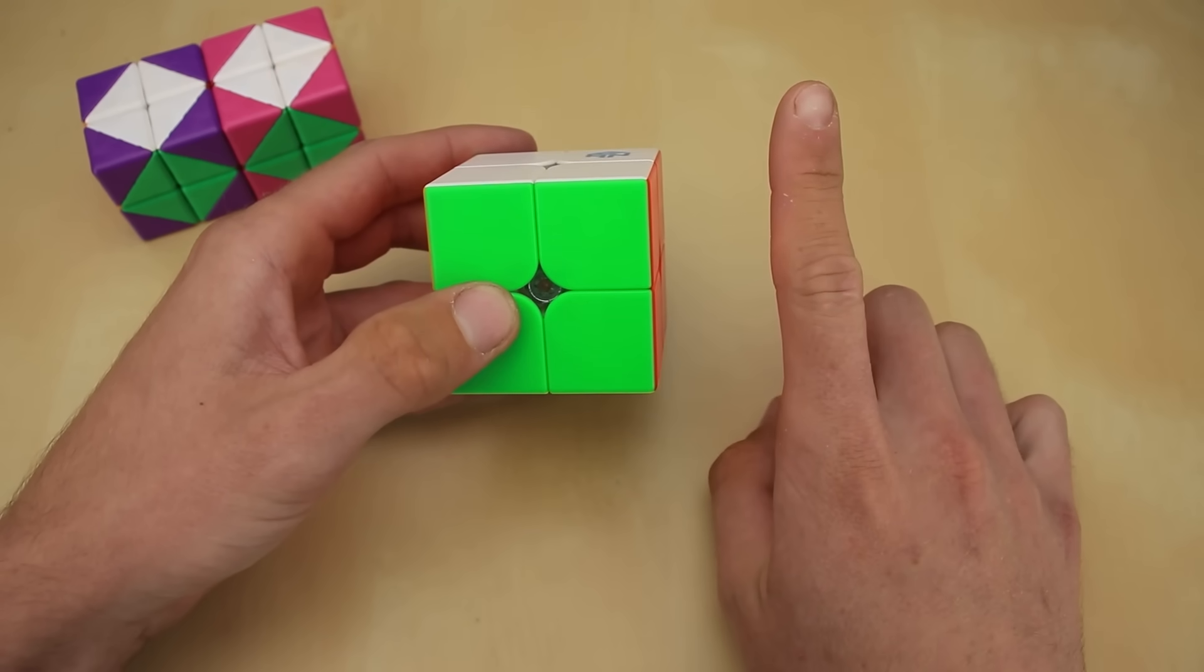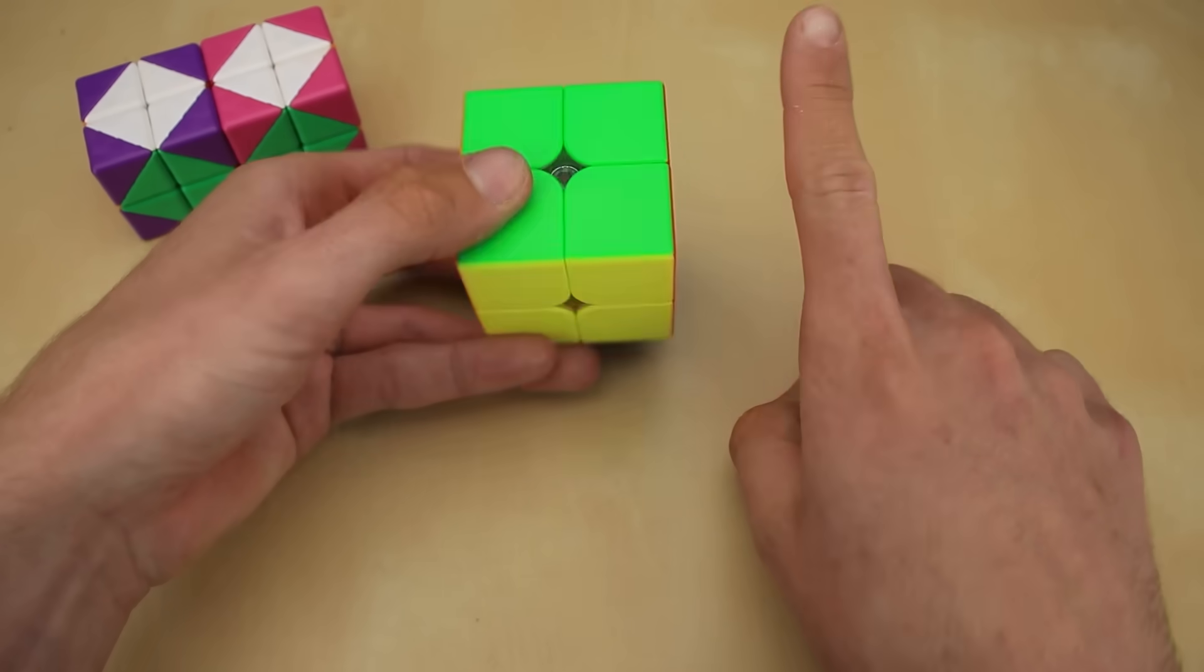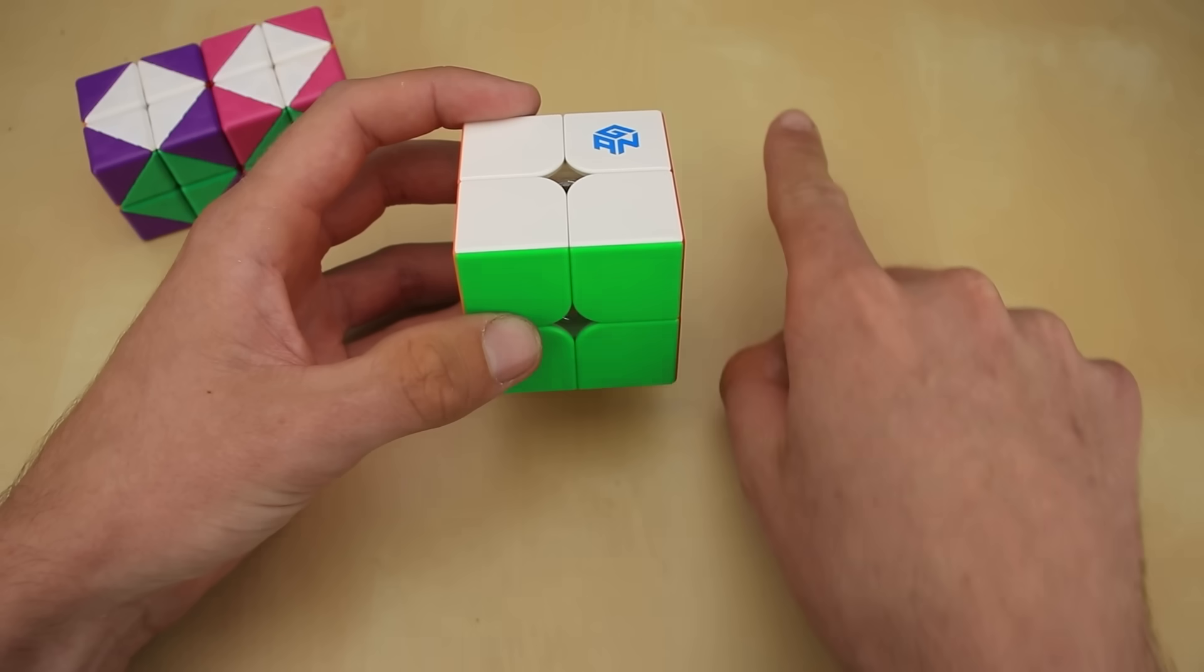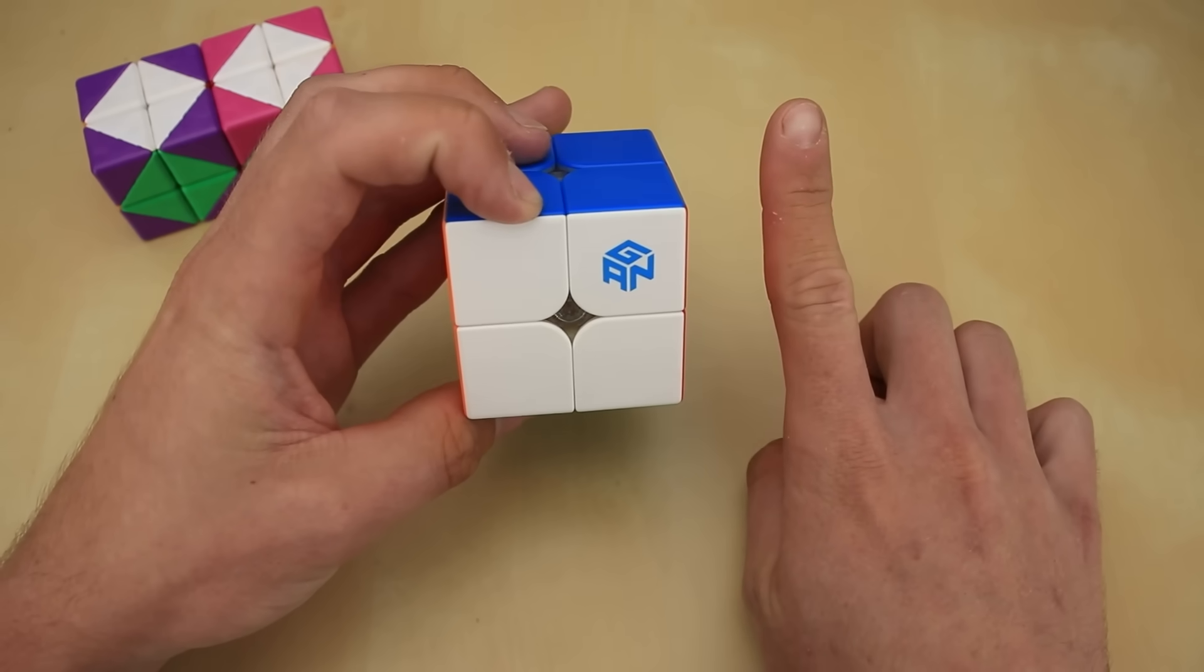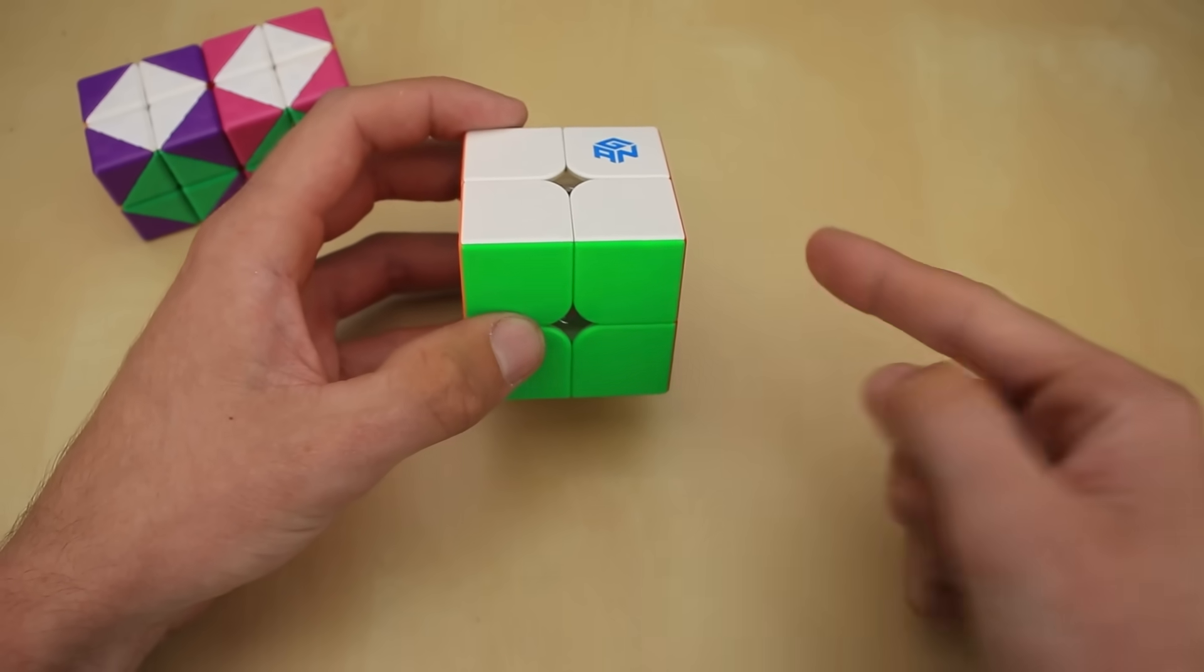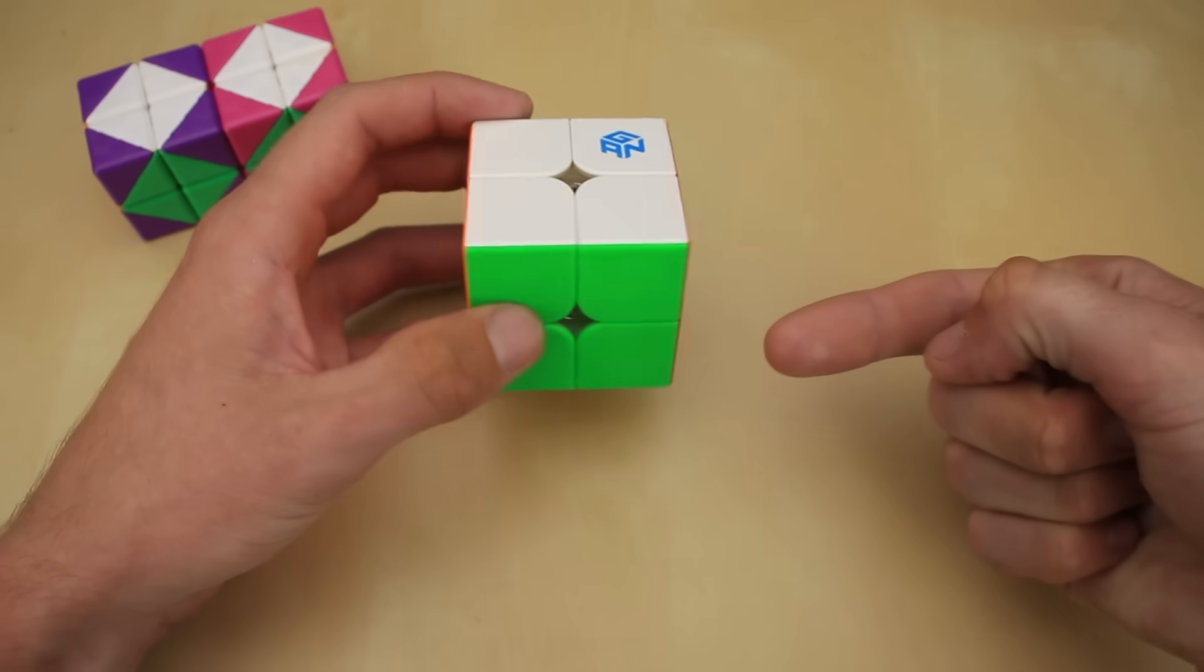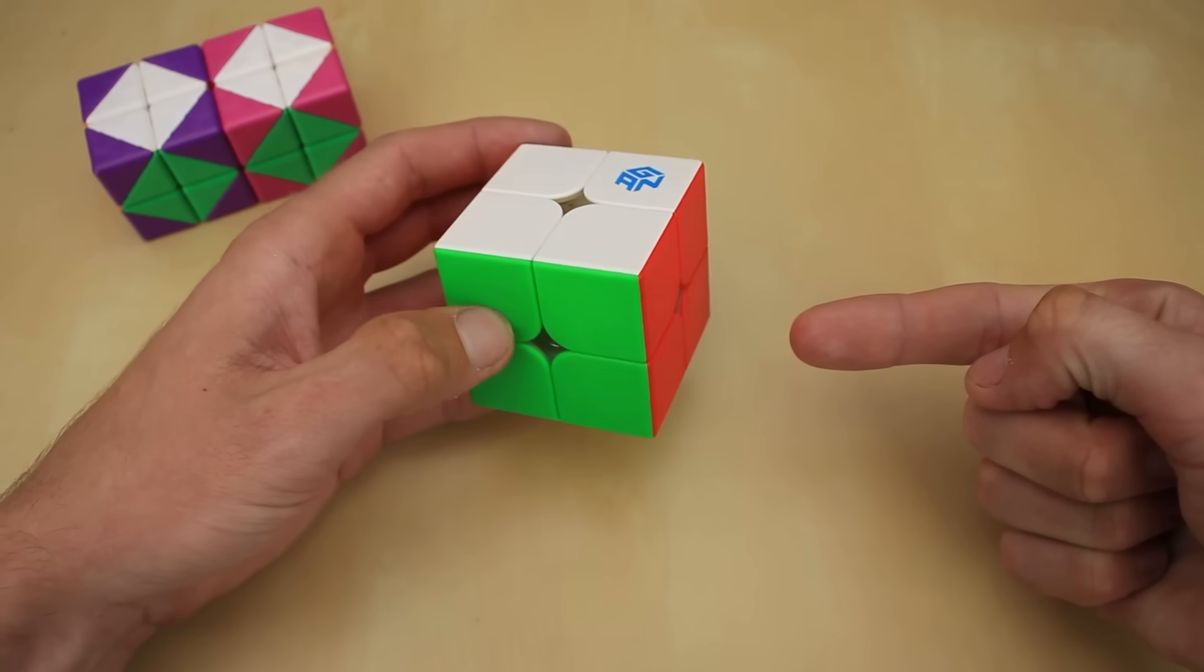The first axis goes in this direction, through the top and bottom of the cube, and currently has white and yellow on it. The next axis goes in this direction, through the front and back of the cube, currently with green and blue. And the third axis goes in this direction, from the left to the right, and currently has yellow and orange.